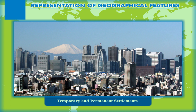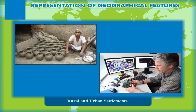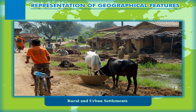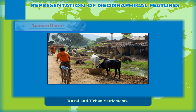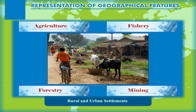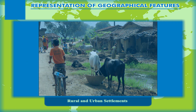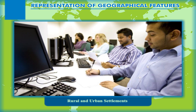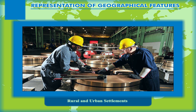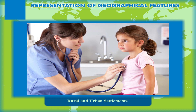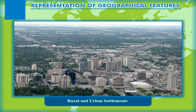Most of the settlements we see today are permanent settlements — they are not abandoned and remain in use continuously for several years. Rural and Urban Settlements: On the basis of the type of occupation practised by inhabitants, settlements may be rural or urban. In rural settlements, most people are engaged in primary occupations like agriculture, mining, fishery, and forestry, with products derived directly from nature. Villages are examples of rural settlements. In urban settlements, people are engaged in secondary and tertiary occupations — they work in industries or provide services like health and education. Towns and cities are examples of urban settlements.